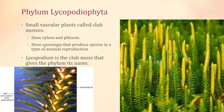A spore is a type of asexual reproduction — you don't have to get two cells together to make a spore, and a spore can just land in soil and grow into a new plant all on its own. So no fertilization is needed; it's just an easier way for plants to reproduce that doesn't rely on needing a second cell.